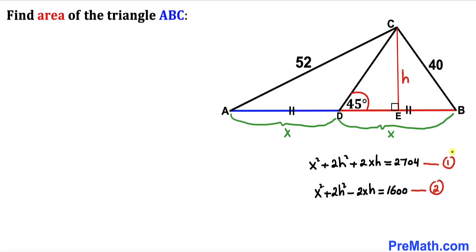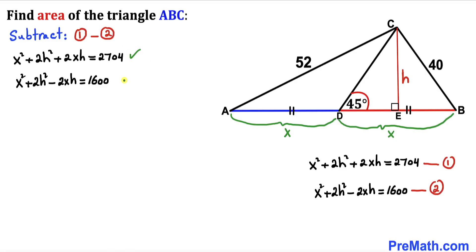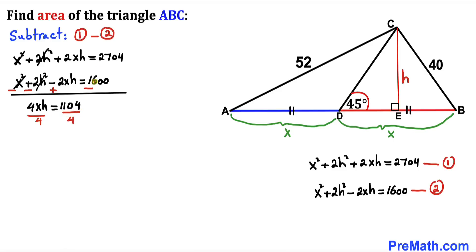We now have two equations. Subtracting equation 2 from equation 1: the X² and 2H² terms cancel, leaving 4XH = 2704 − 1600 = 1104. Dividing both sides by 4, we get XH = 276.